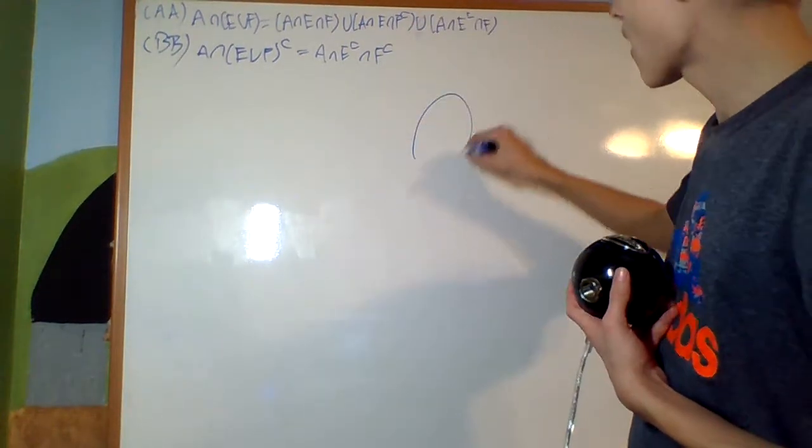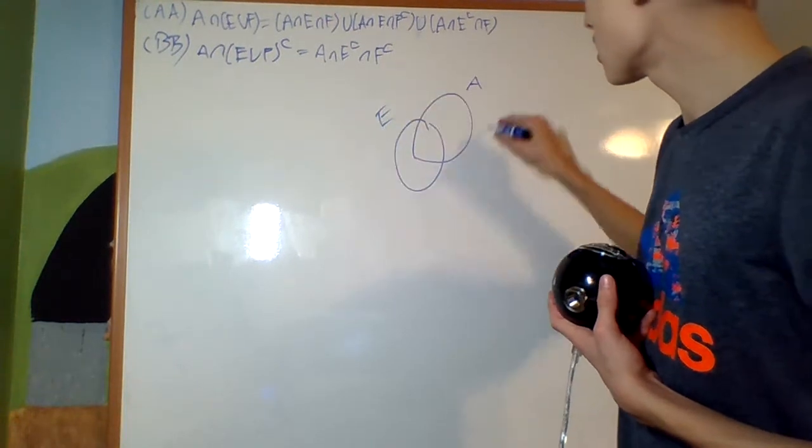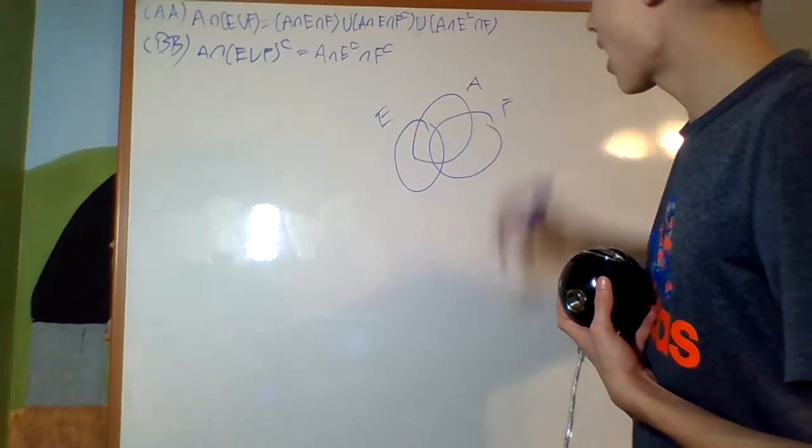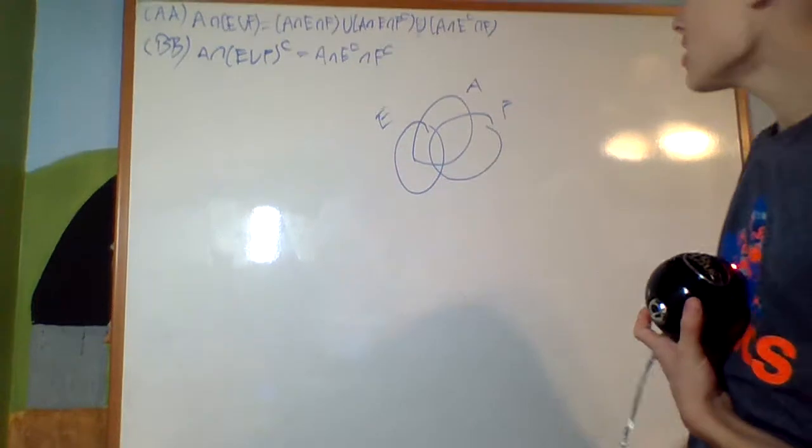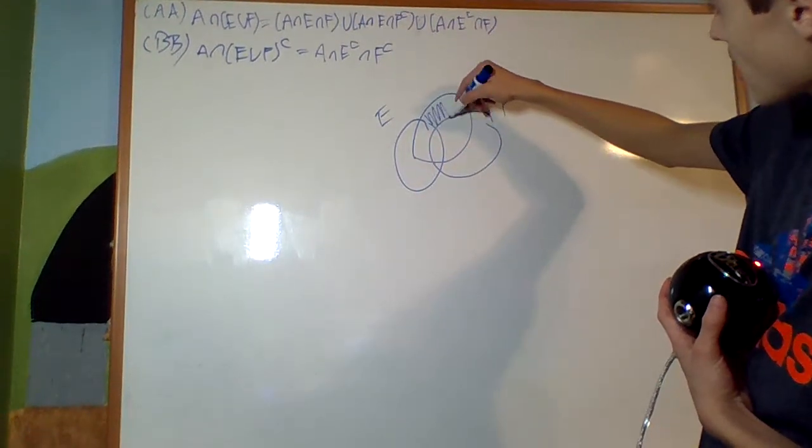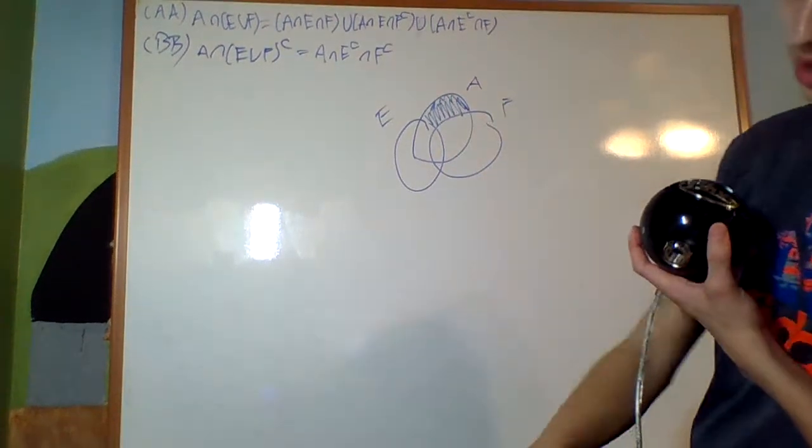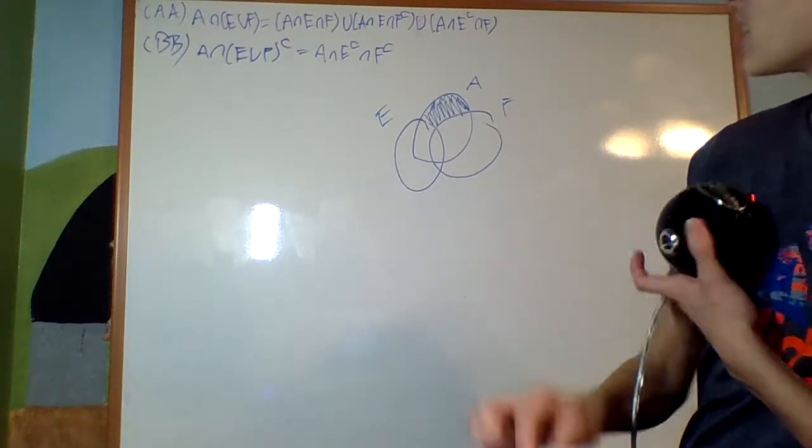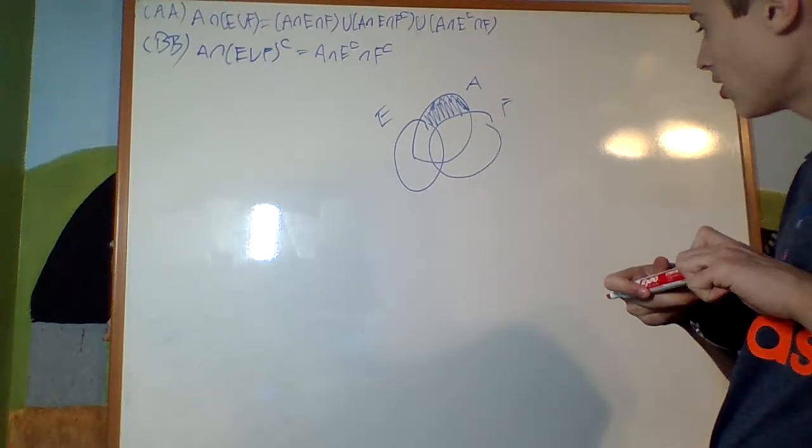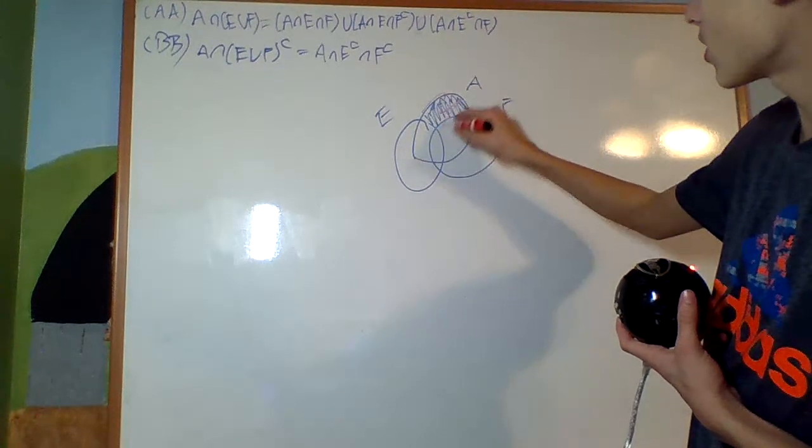So what is this saying? A, E, F. A intersect their union complemented, this area right here, area right there.